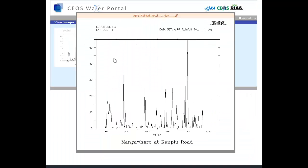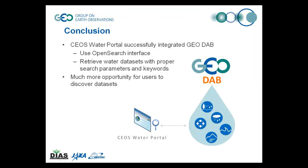The Water Portal allows you to see a quick-look image before download. As just demonstrated, the same datasets in relation to water variables are mutually discoverable from both portals by integrating GeoDab. Whereas GeoPortal is a cross-domain, neutral client looking at the entire GEO's resources, CS Water Portal is a domain-specific, community portal focusing on water-related variables. Nevertheless, by making use of proper search parameters, the portal successfully integrated DAB, giving its users much more opportunity to discover and access the data that they are after.